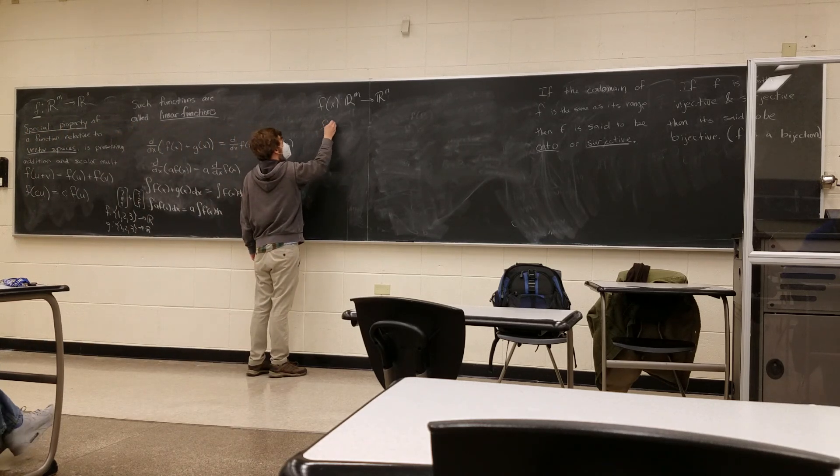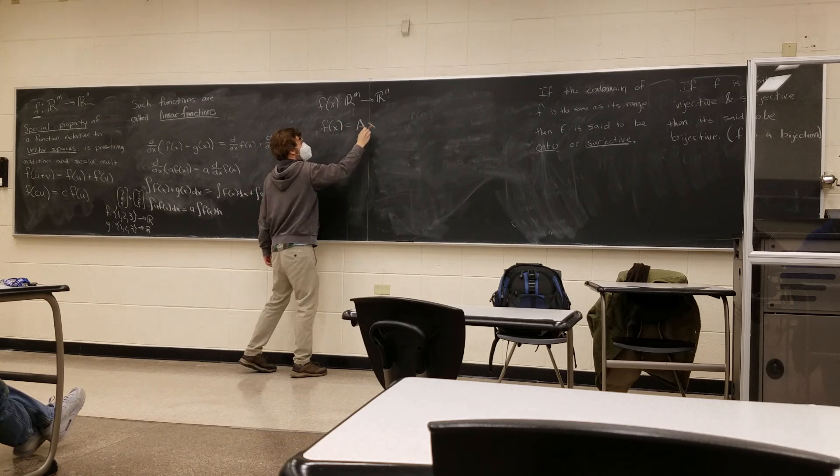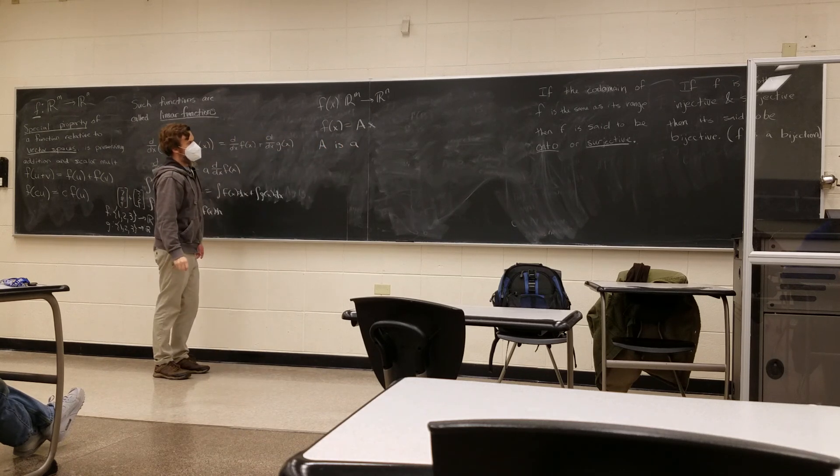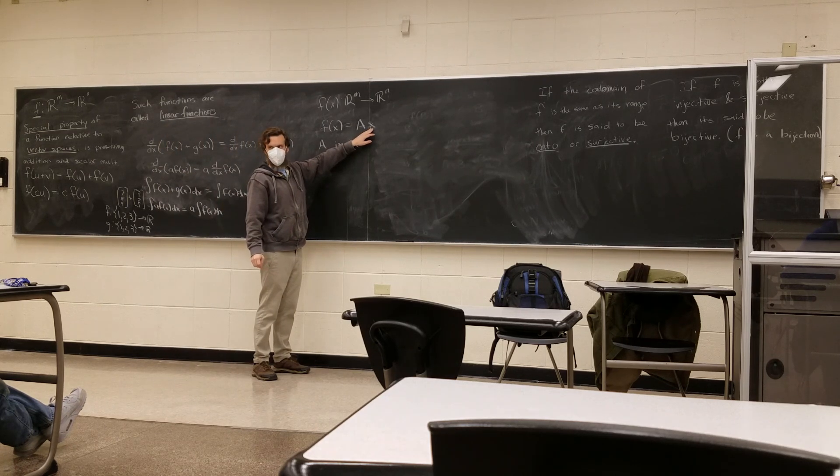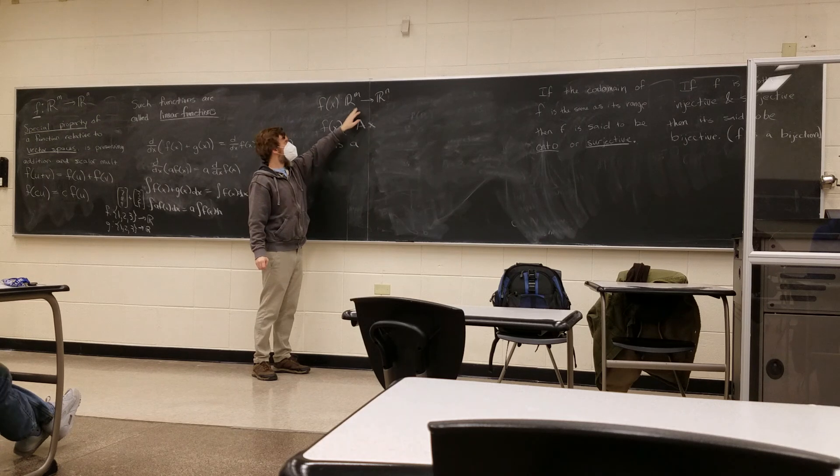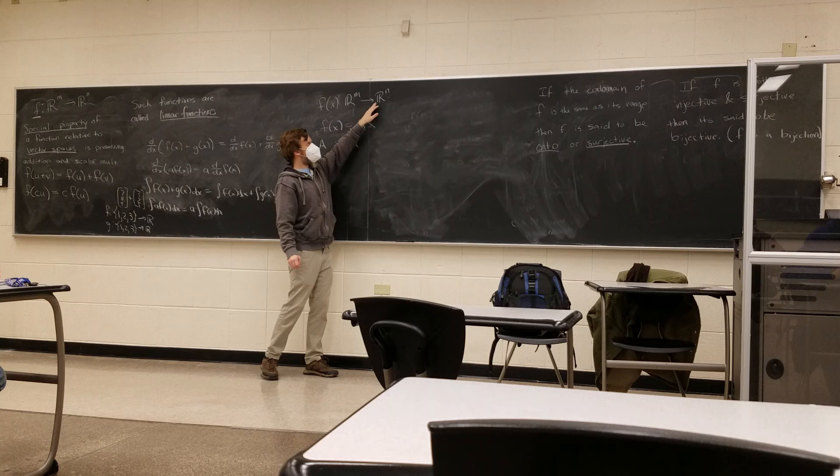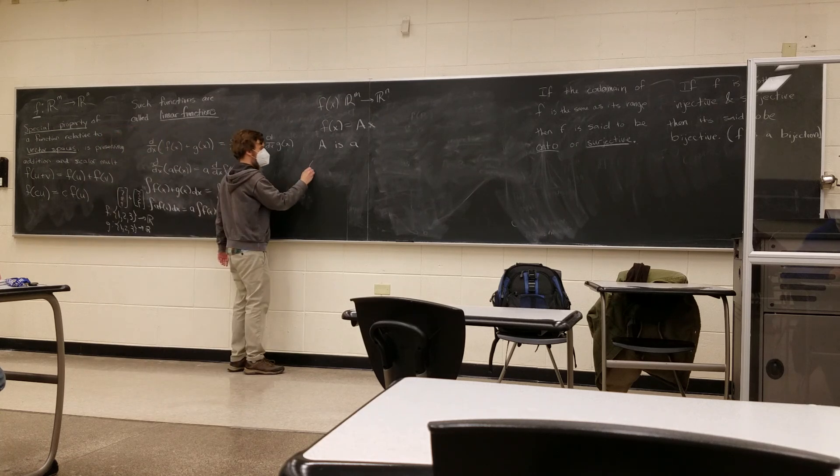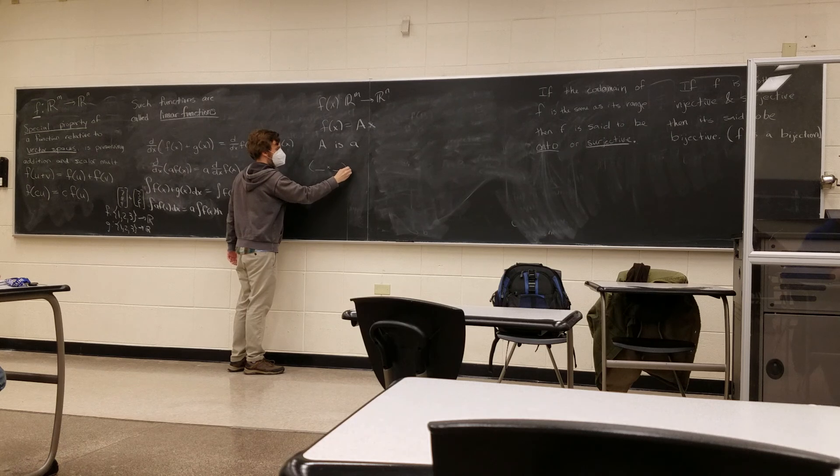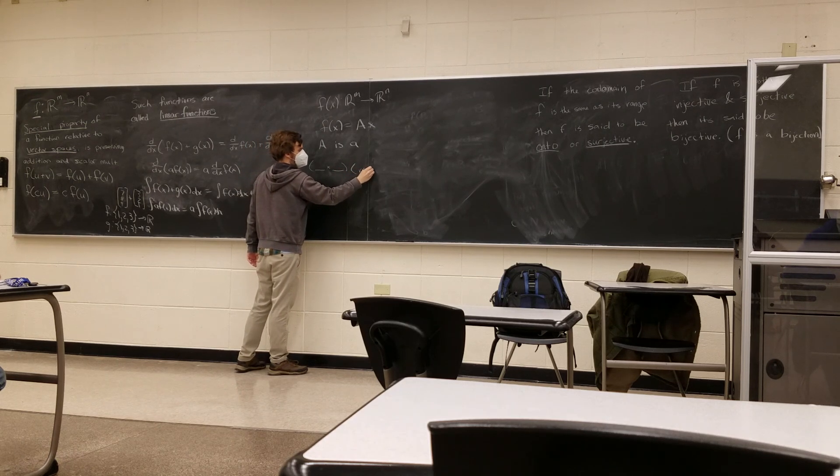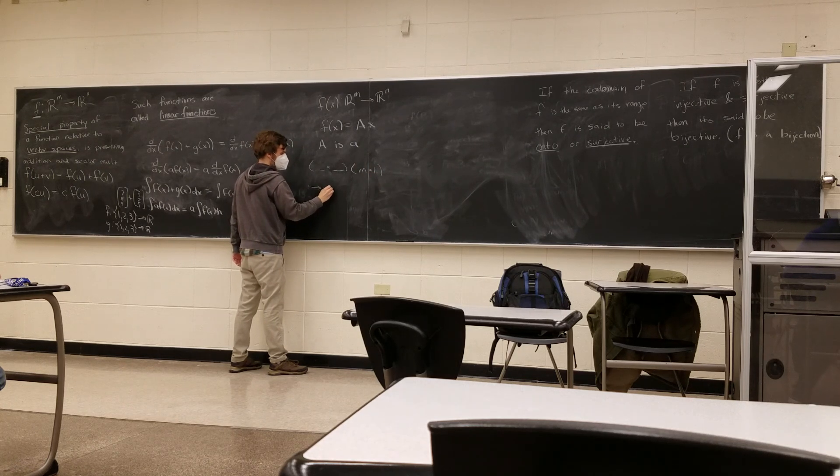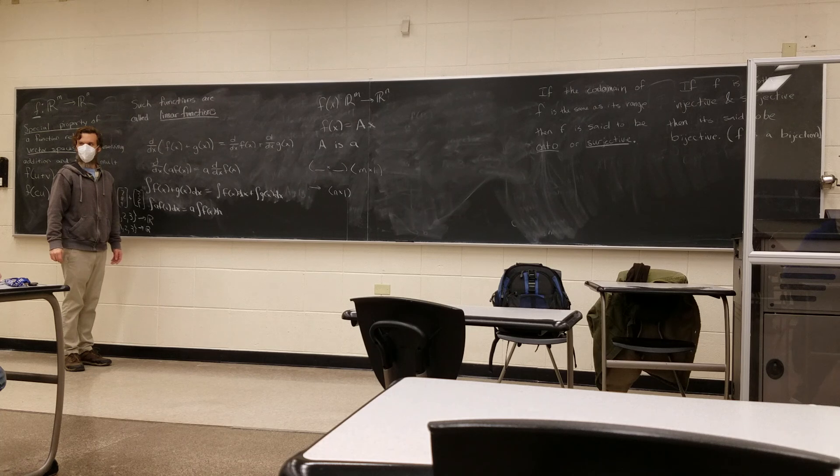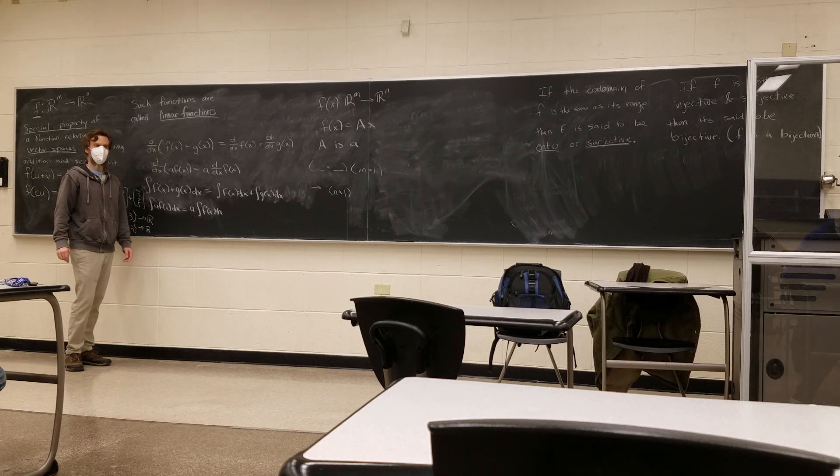f of x is going to be equal to Ax, where A is a, the input has to have m entries, right? It's from Rm, so it has m entries, and the output has n entries. So what would the dimensions of that matrix be?